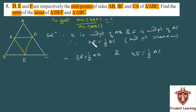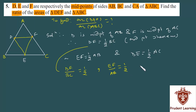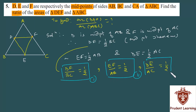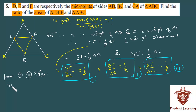So, DF/BC = 1/2 — call this equation 1. EF/AB = 1/2 — equation 2. DE/AC = 1/2 — equation 3. From equations 1, 2, and 3: DF/BC = EF/AB = DE/AC = 1/2.